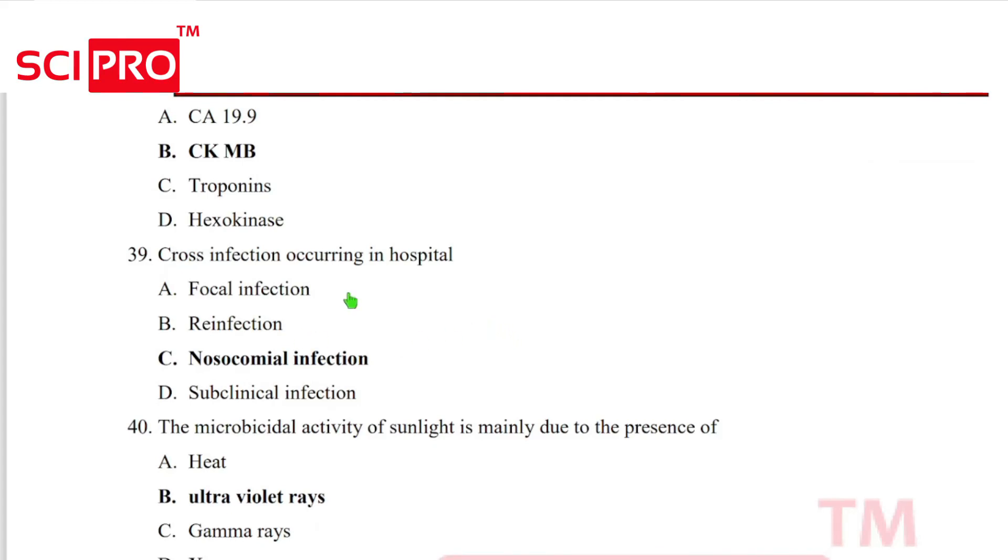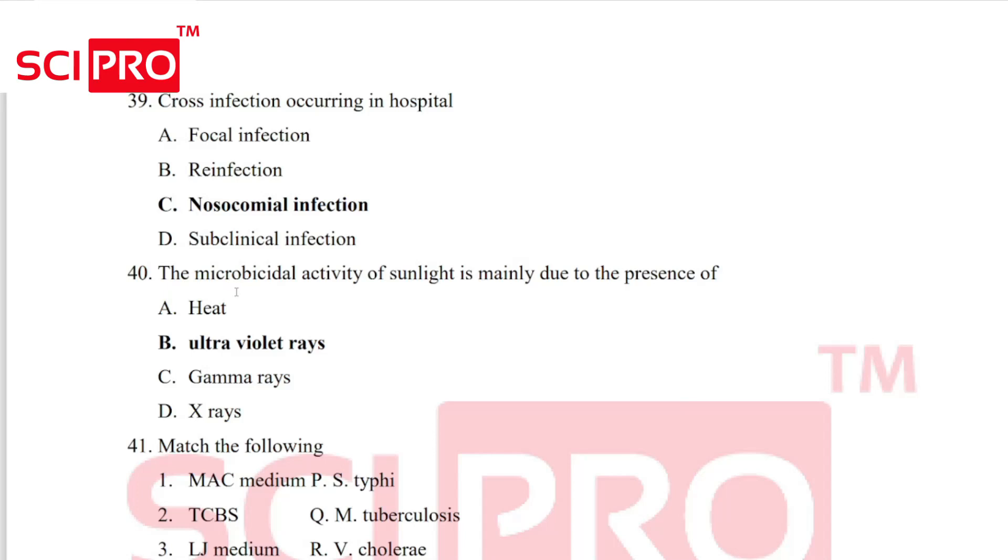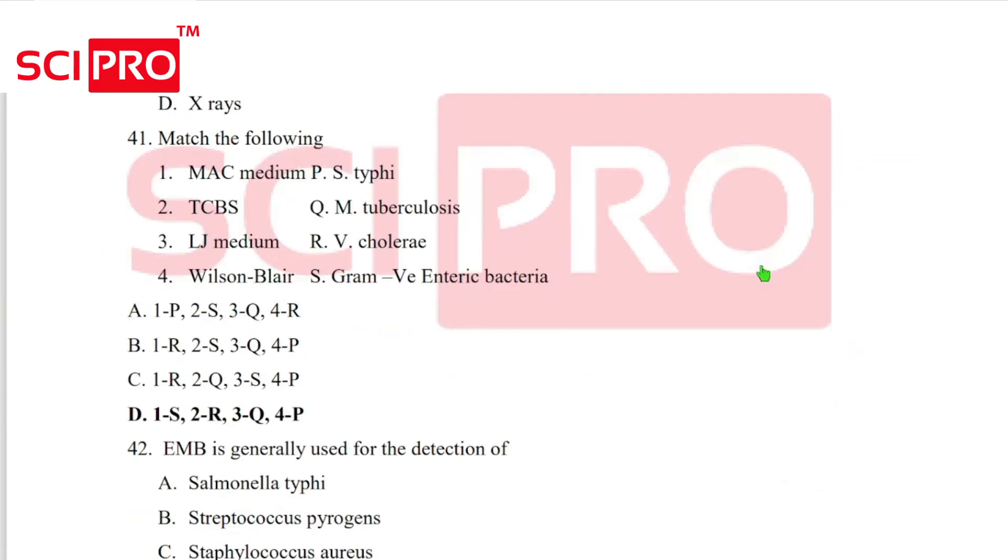Question 39, cross-infection occurring in hospital is known as nosocomial infection. Question number 40, the microbicidal activity of sunlight is mainly due to the presence of UV rays. Match the following: MAC medium for gram-negative enteric bacteria, TCBS for Vibrio cholerae, LJ medium for tuberculosis, Wilson-Blair for Salmonella typhi.